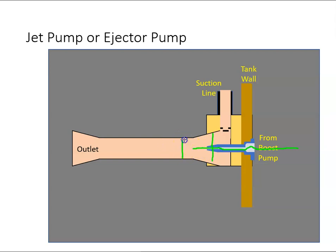If we get a low pressure here at this point, that low pressure is used to draw fuel in from above to mix with this fuel, and both the fuel from the booster pump and the fuel coming in on the suction line will go out through the outlet.